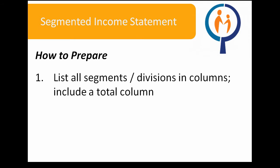Preparing a segmented income statement is actually quite simple. Begin by listing all segments or divisions in columns. For example, if my company had a Vancouver division and a Surrey division, I would have one column devoted to Vancouver and one column devoted to Surrey. Don't forget to also include a total column. This will be the aggregate of all divisions in the income statement, in this case Vancouver and Surrey.